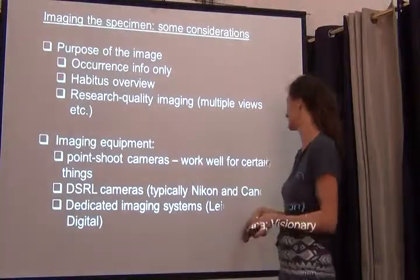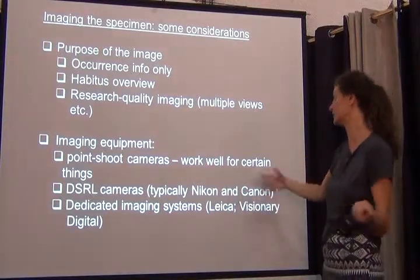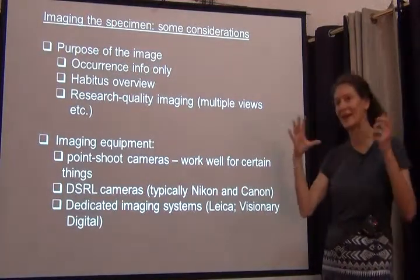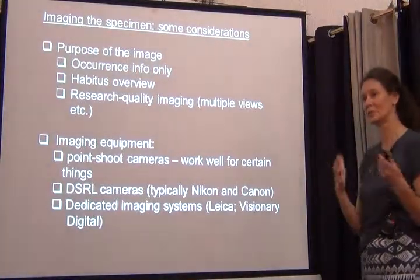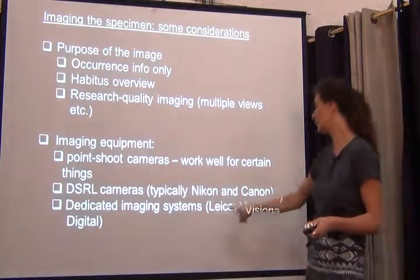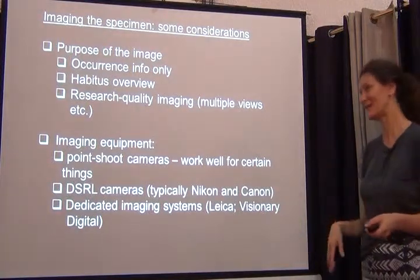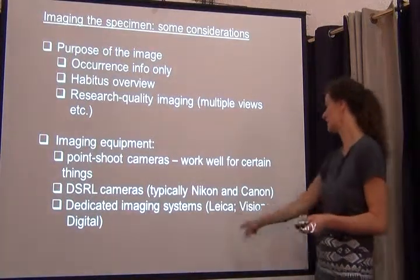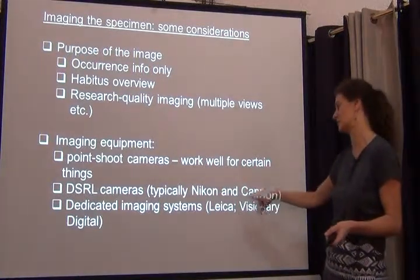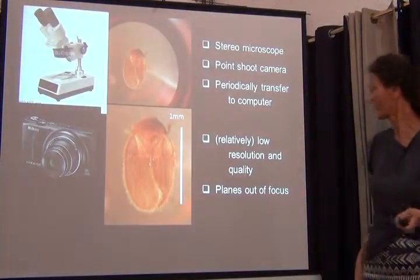Imaging equipment ranges all the way from point-and-shoot cameras, which work quite well for certain things, to DSLR cameras — Kim was talking about those as well, typically Nikon and Canon, which are very frequently used in entomology. Think of insects being relatively small, so we have to adjust our imaging hardware accordingly. What most people are using now are dedicated imaging systems, which are breathtakingly expensive unfortunately. Leica has very famous imaging systems, and Visionary Digital systems have become very popular in North America, Europe, and Australia.